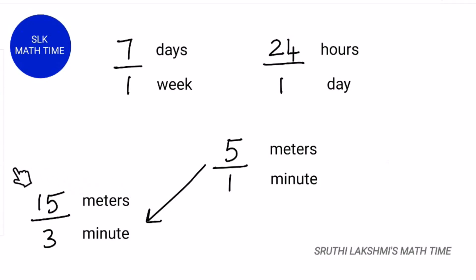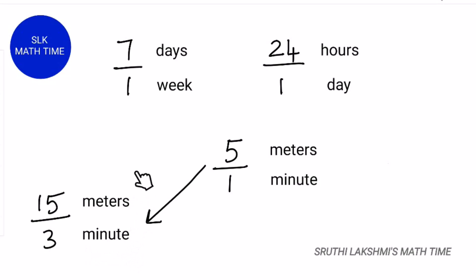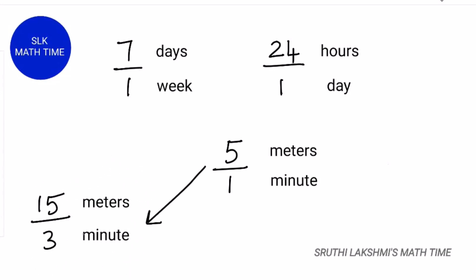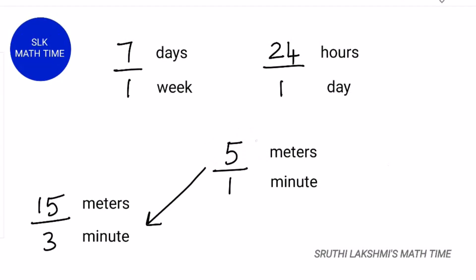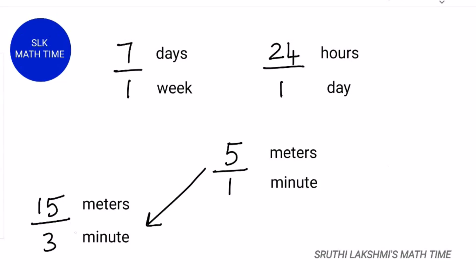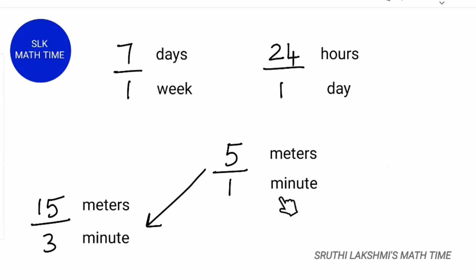So we have 15 meters per 3 minutes, and we want to find how many meters in 1 minute. We have to divide the numerator by the denominator. 15 divided by 3 is 5. So the numerator of our answer will be 5 and the denominator will be just 1. So 5 meters per 1 minute.